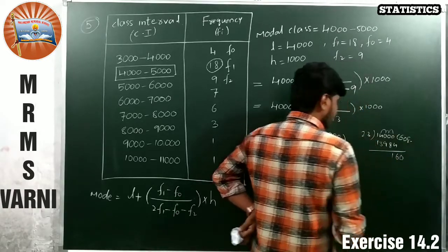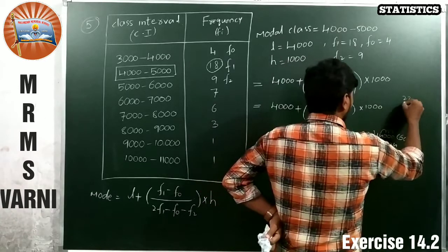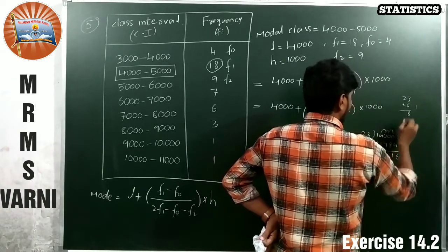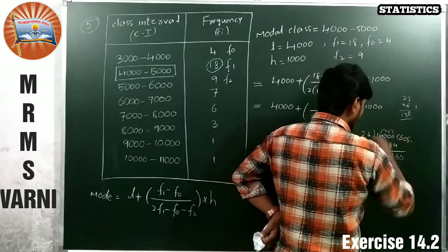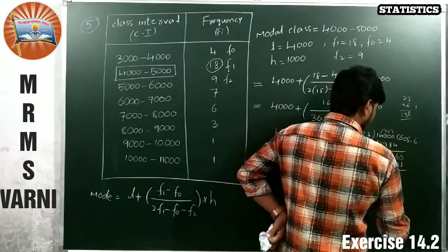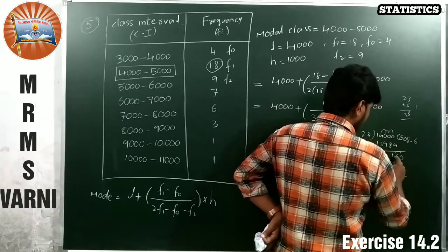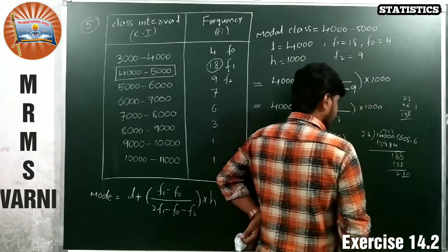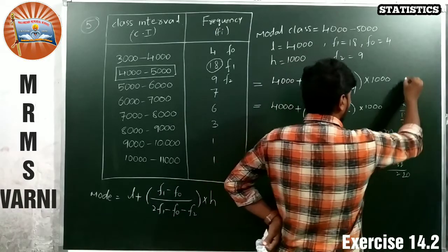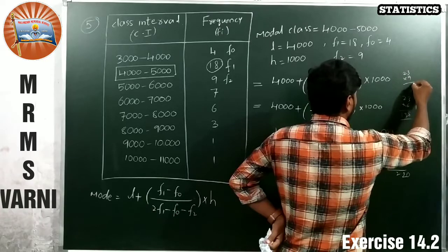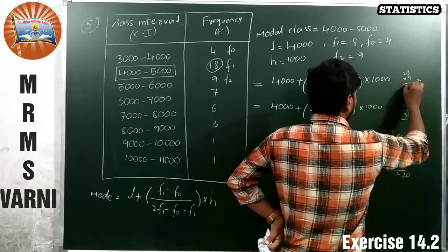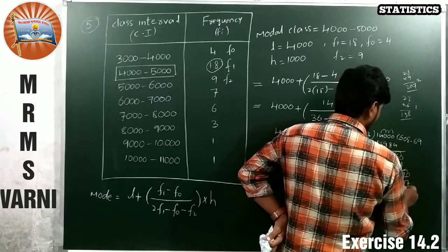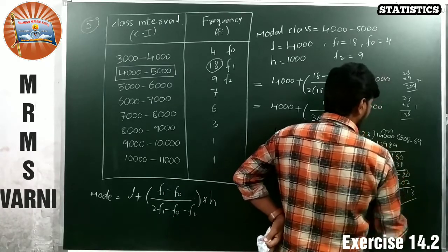23 into 20. We can take 9. 23 into 9 is 27. 9 into 18 is 180. 207. 9 into 23 is 207. So 3, that is 21. Enough for this.